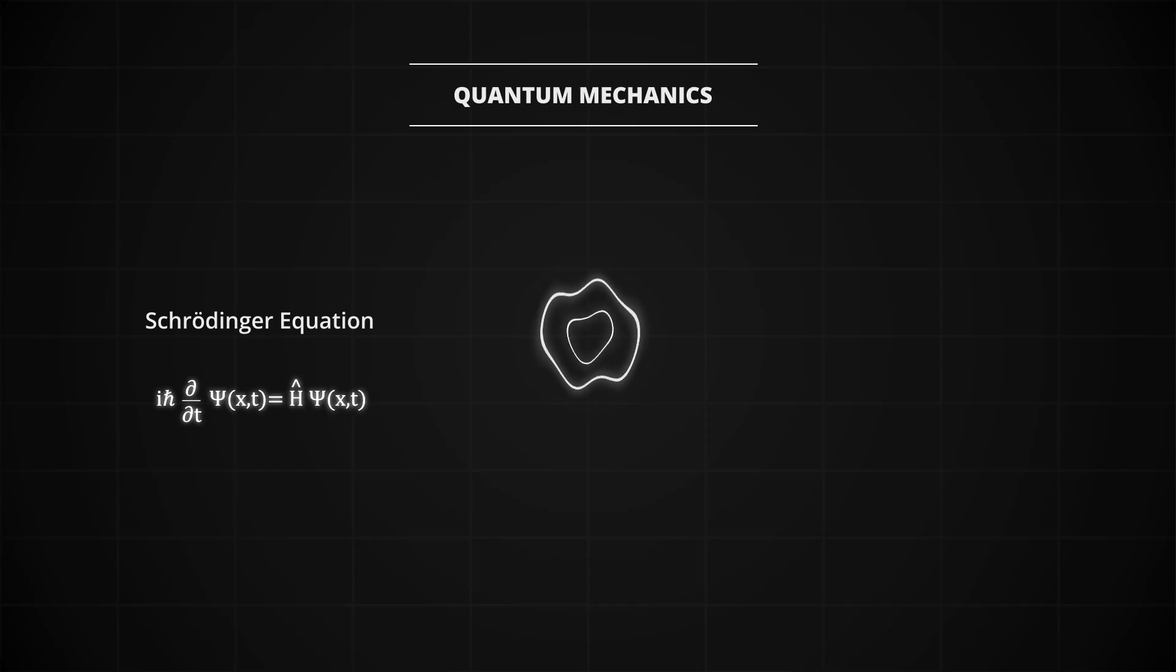But here's the problem. We never actually observe the wave function itself. Instead, when we measure it, we always find the particle at a single point in space. So how does a spread-out wave function, evolving smoothly under the Schrödinger equation, suddenly give us a single point-like particle when we observe it?